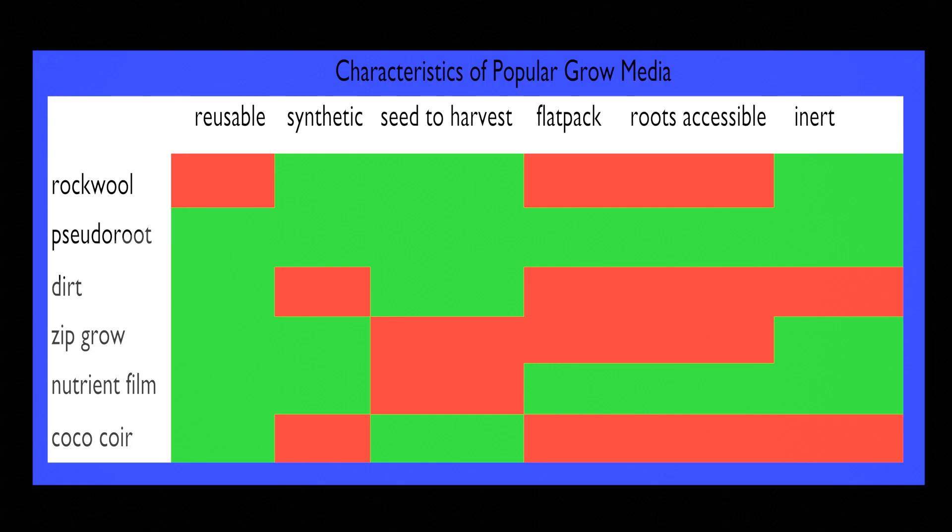The ability to grow synthetic fabric is useful knowledge in an emergency situation, anywhere in the solar system. Pseudoroot is easily manufactured using components that are already in space, in any city, and in most homes. You can manufacture Pseudoroot using the clothes on your back.